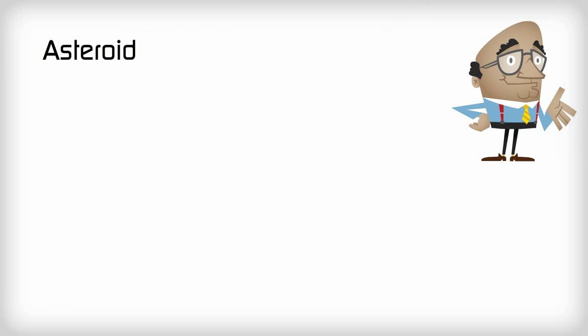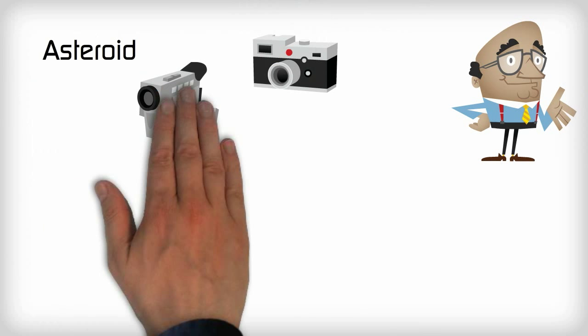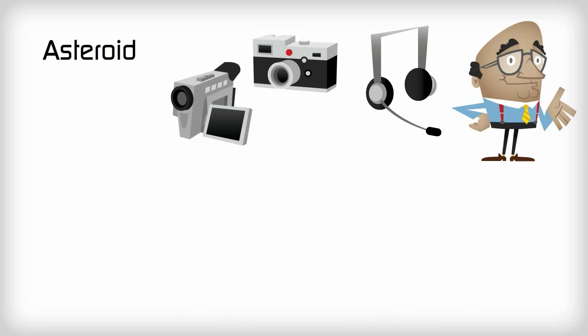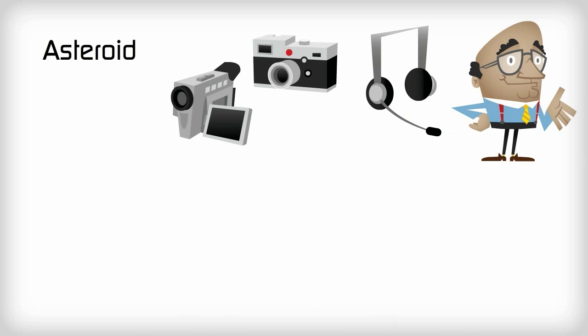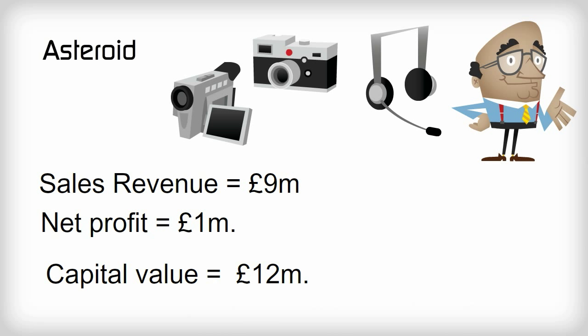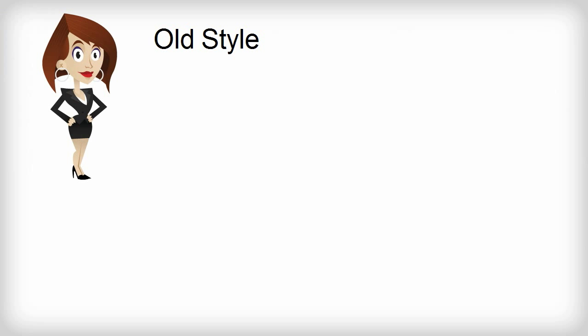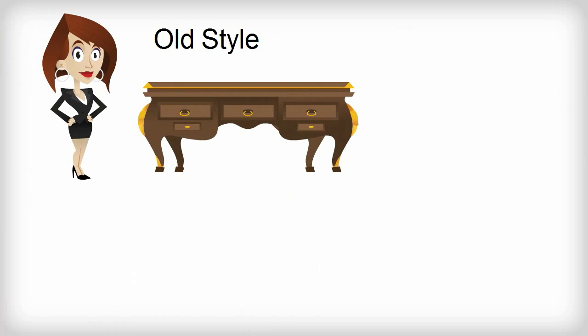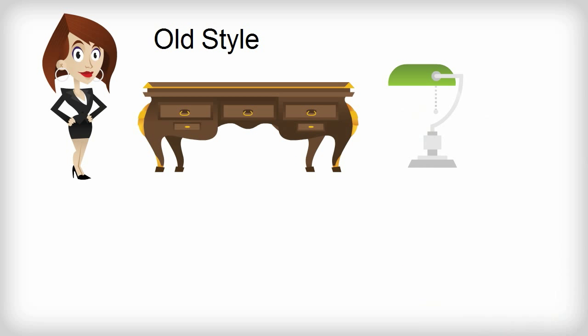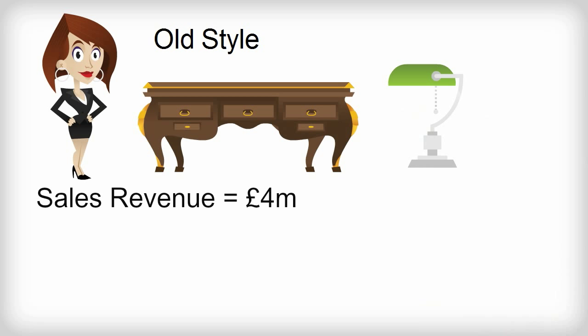Ron's company is Asteroid, which operates a chain of electrical retail shops. His sales revenue is £9 million, net profit is £1 million and capital value is £12 million. Marcia runs a company called Old Style, which retails antique reproduction furniture. Her sales revenue is £4 million, her net profit is £1 million and her capital value is £15 million.